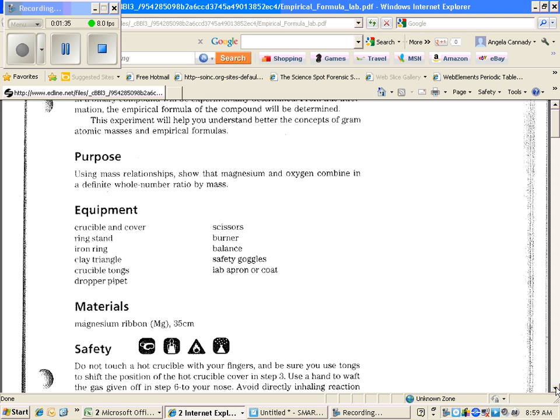Remember, the purpose of this experiment is to show that magnesium and oxygen combine in whole number ratios. We're going to take magnesium ribbon and oxygen from the air and react them together. We're going to burn it.